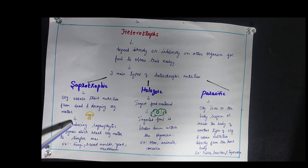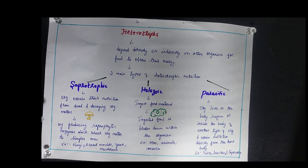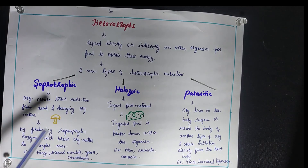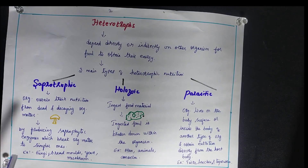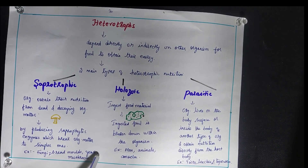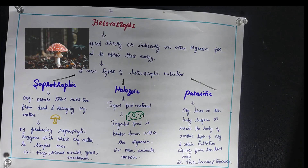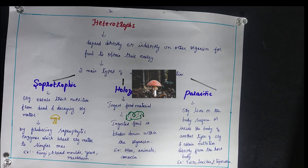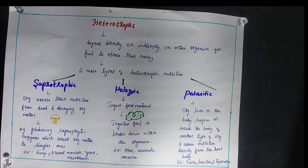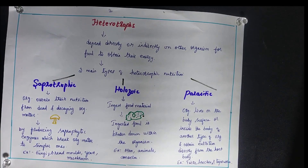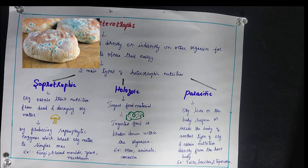Saprotrophic organisms, or saprotrophs, obtain their nutrition from dead and decaying organic matter. They produce enzymes called saprophytic enzymes which break down organic matter into simpler substances. Examples include fungi, bread mold, yeast, and mushroom. You would have seen mushrooms growing on damp, decaying wooden parts, getting their nutrition by breaking complex forms into simpler forms using saprophytic enzymes.